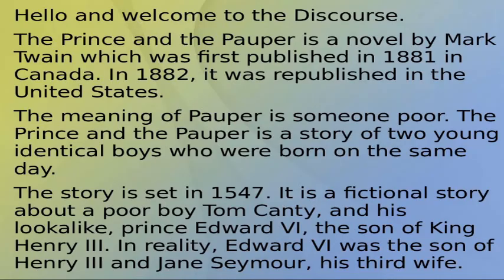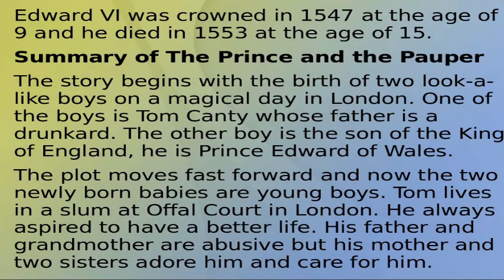The meaning of 'pauper' is someone poor. The Prince and the Pauper is a story of two young identical boys who were born on the same day. The story is set in 1547. In reality, Edward VI was the son of Henry VIII and Jane Seymour, his third wife. Edward VI was crowned in 1547 at the age of 9, and he died in 1553 at the age of 15.